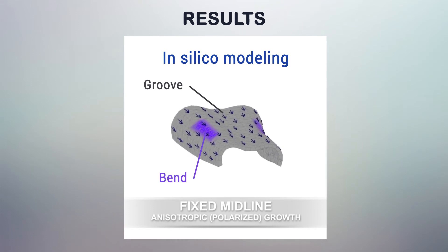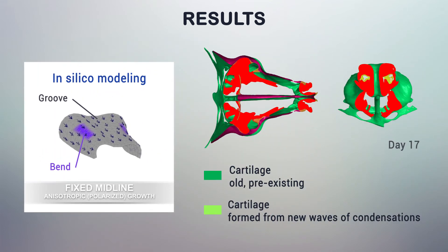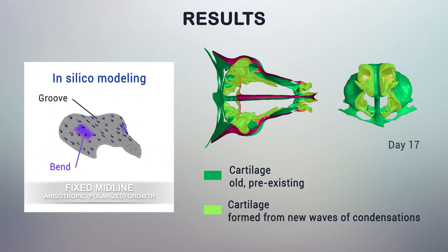At the same time, continual addition of freshly induced chondrogenic condensations that adjoin the main structure explains how complex minor geometrical features are born.